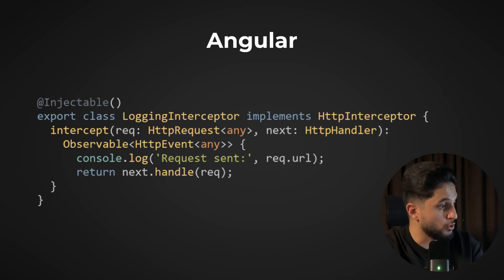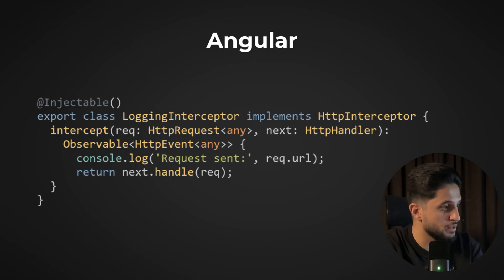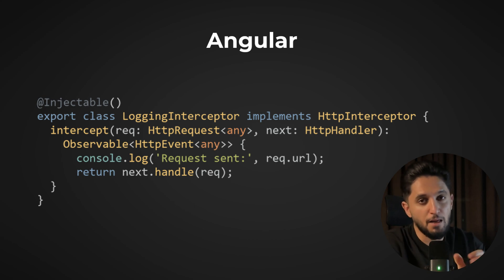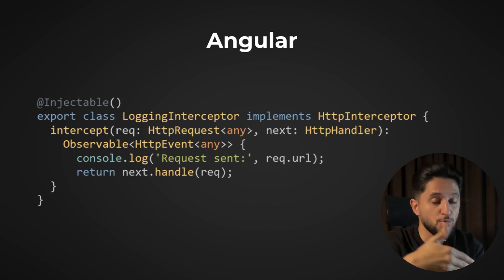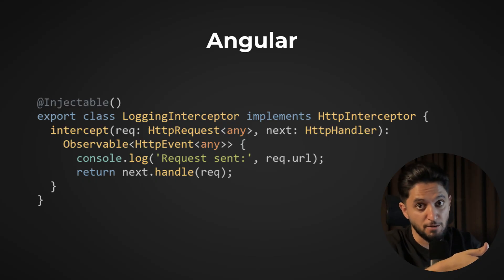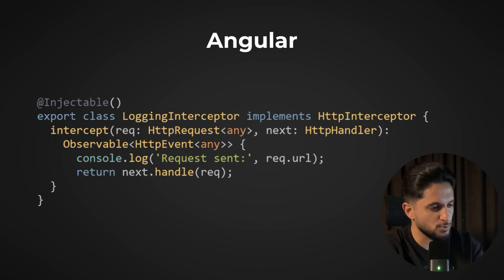In Angular, HTTP interceptors are a perfect example of the proxy pattern. When you make an HTTP request, the interceptor acts as a proxy that can intercept, modify, and enhance requests before they reach the server. You register an interceptor that implements HttpInterceptor, and Angular routes all requests through it before they reach their original destination. The interceptor can add authentication headers, cache responses, or log requests — without the calling service knowing anything changed.